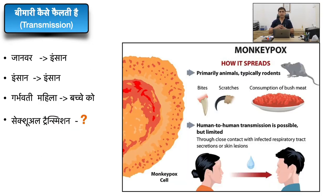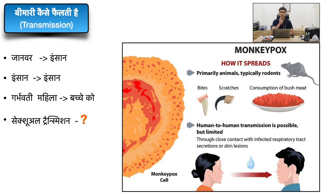Now let's see how the virus is transmitted. There are three main modes. First, transmission from animals to humans — through bites, scratches, or consumption of bush meat. Second, human-to-human transmission, which usually happens through respiratory secretions or sputum, and via respiratory droplets from sneezing, though the probability of this is lower. Third, transmission from a pregnant female through the placenta to the fetus. There is also a fourth mode — sexual transmission — which is considered skeptical and not yet confirmed.